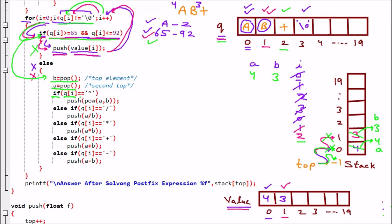Now we check the operator. If q[i] == '^' (power), no. Else if q[i] == '/', no. Else if q[i] == '*', no. Else if q[i] == '+', yes — we have plus. So we call push(A + B), which is push(4 + 3) = push(7). The value 7 is placed on the stack and top is incremented to 0.